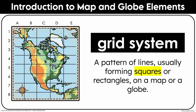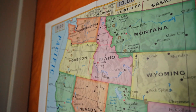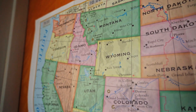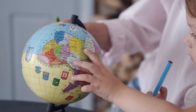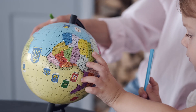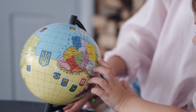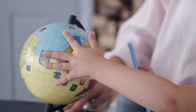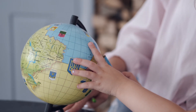A grid system is a pattern of lines, usually forming squares or rectangles, on a map or globe. These lines help locate places more easily. Many maps use latitude and longitude lines as a grid system. If you look at a world map, you'll see horizontal and vertical lines running across it, forming a grid that helps pinpoint exact locations using coordinates.